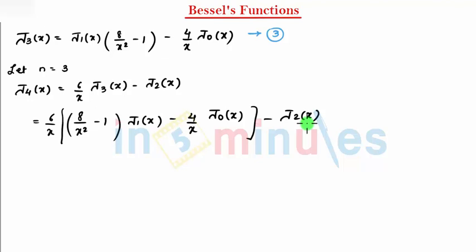After solving this, I get (48/x³ - 6/x) J1(x) minus 24/x² J0(x) minus J2(x).